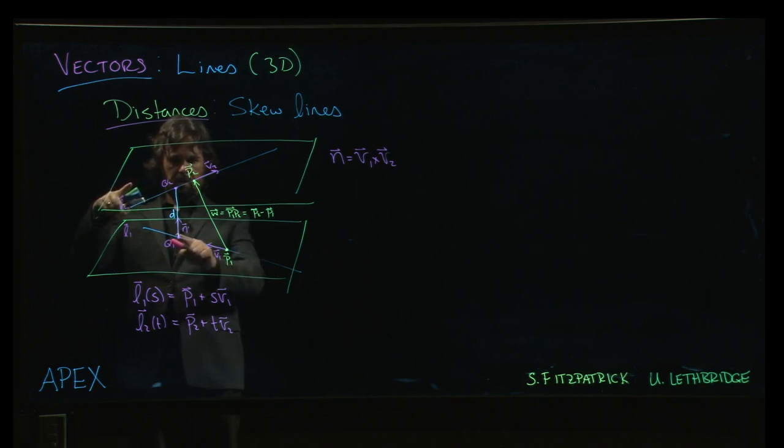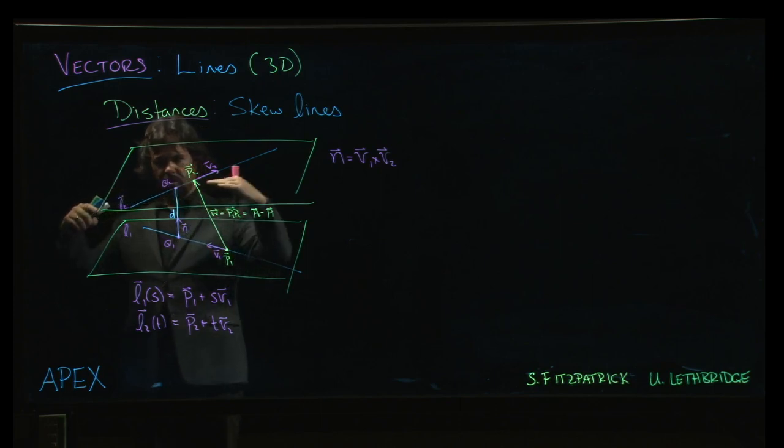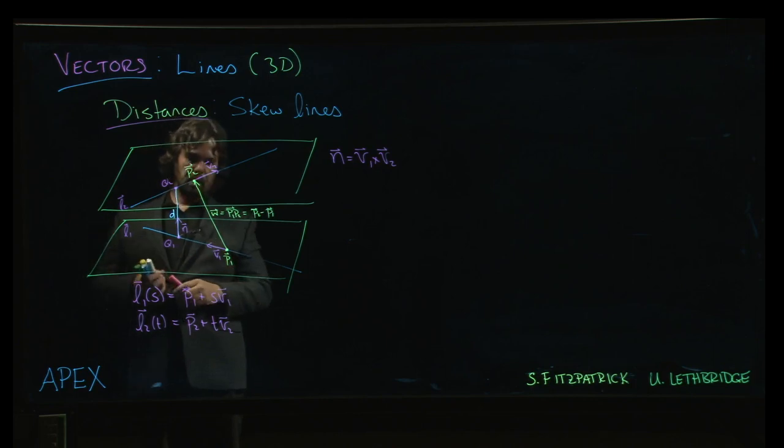And what we want is we don't want the part that's kind of going this way in the direction of the plane. We want just the part of that vector that's going straight up. And so how do we do that? Well, that's a projection.